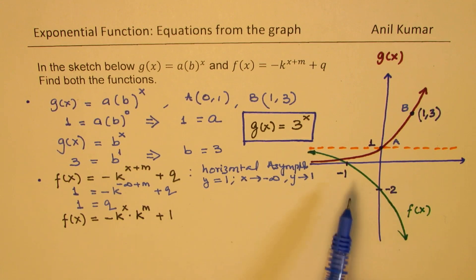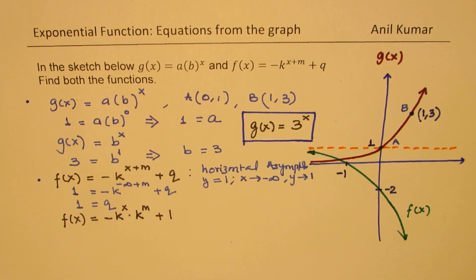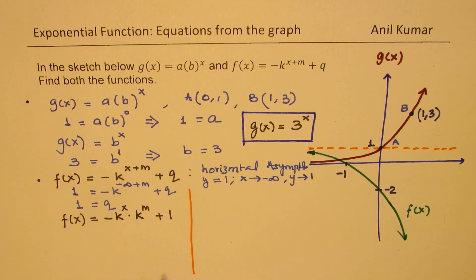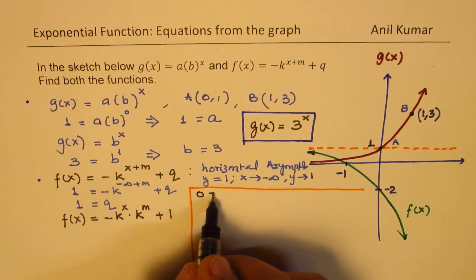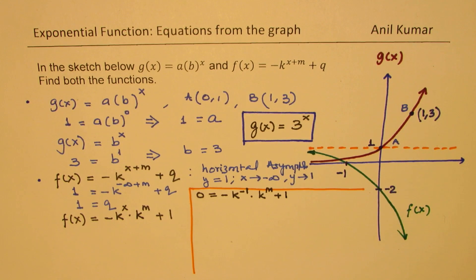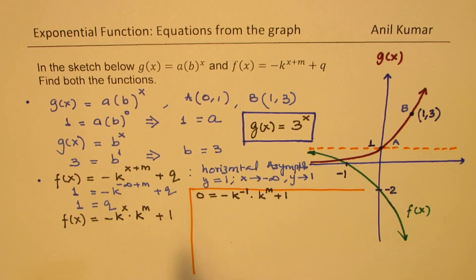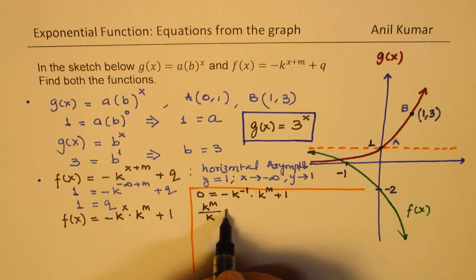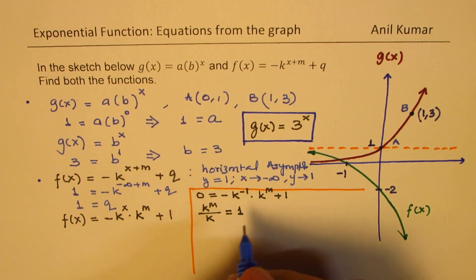Now let us substitute -1 for x value and 0 for f(x). So we get one equation. Let's take it on this side. So let's write both the equations here. So if I substitute -1 for x, I get 0 = -k^(-1) · k^m + 1. Now that really means that I could write this as -1/k. So what we get here, bringing this term to the left side, it is k^m / k = 1. So let me call this as our equation number 1.